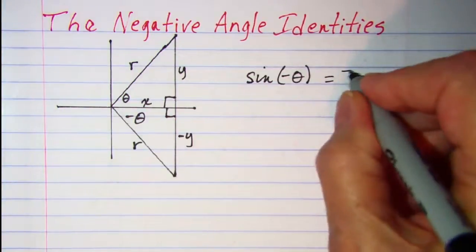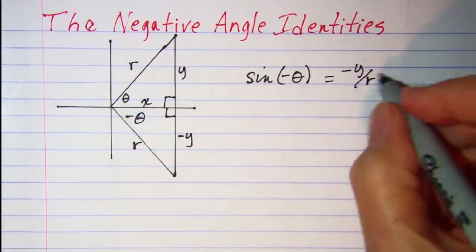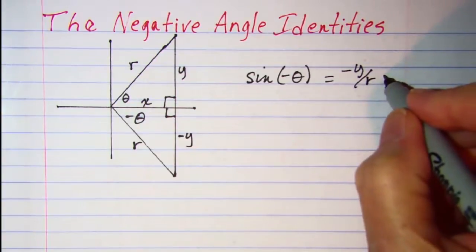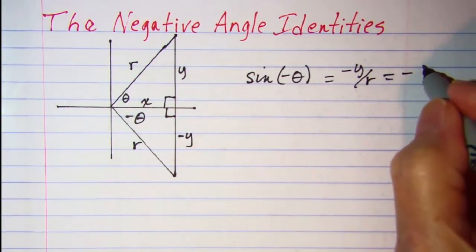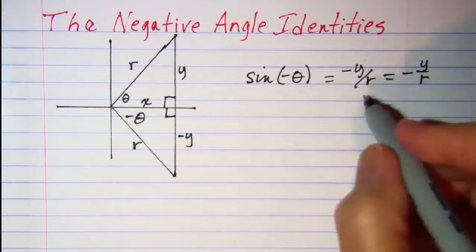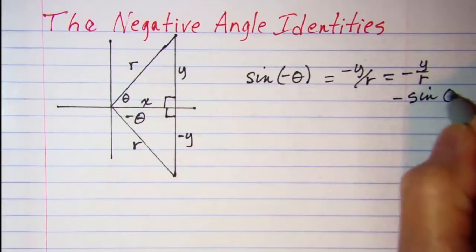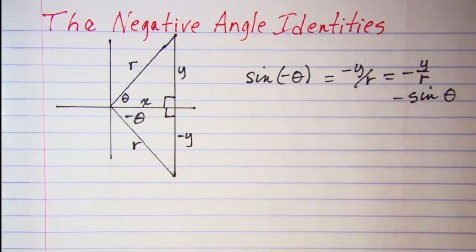So negative y over r, and this is the same as negative y over r, which is negative sine theta.